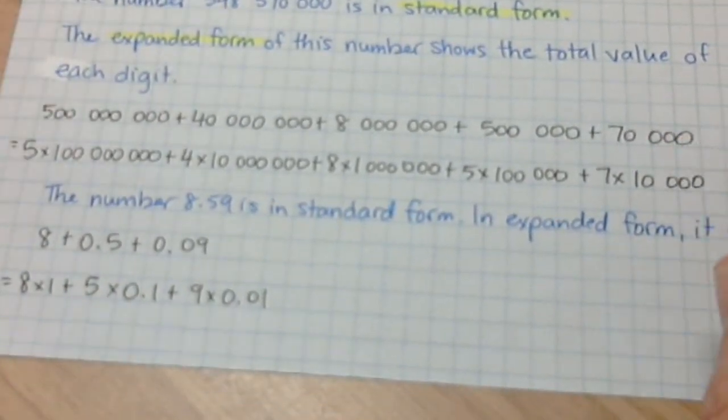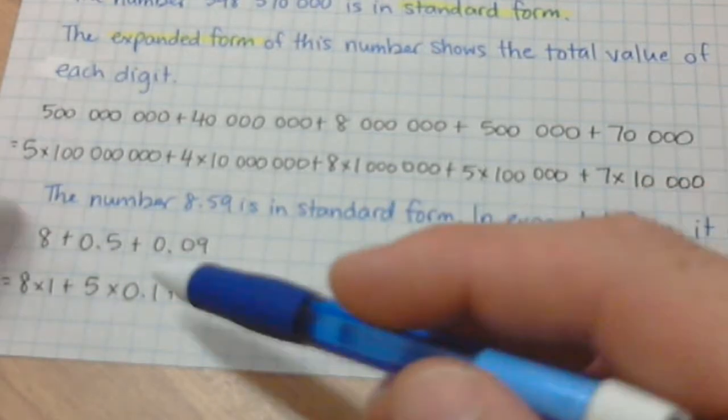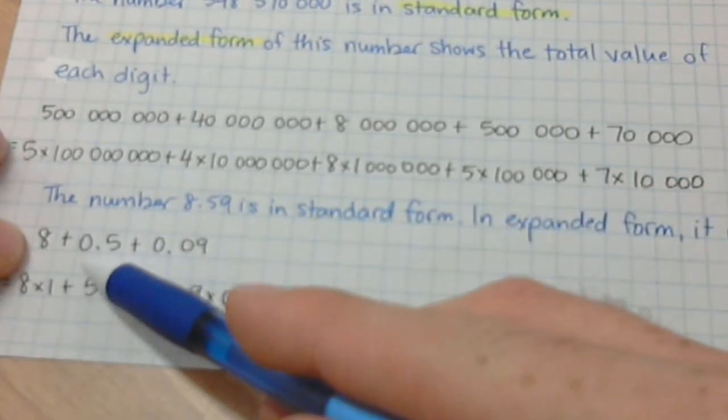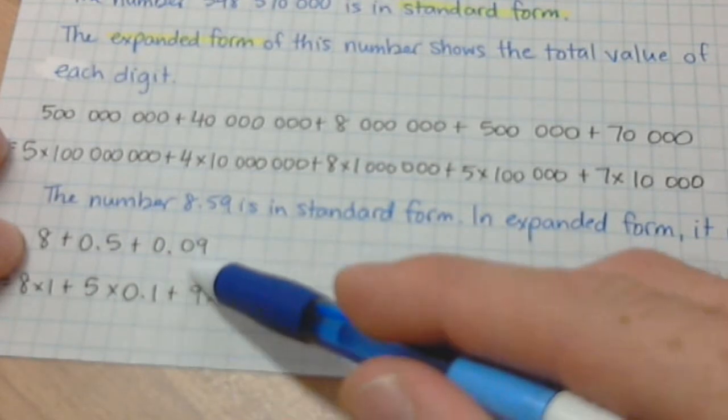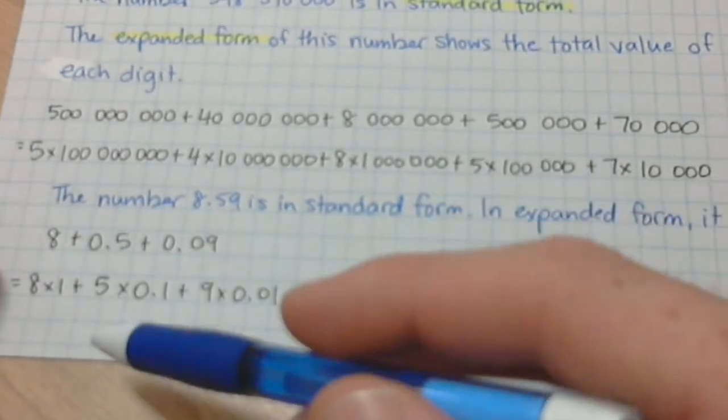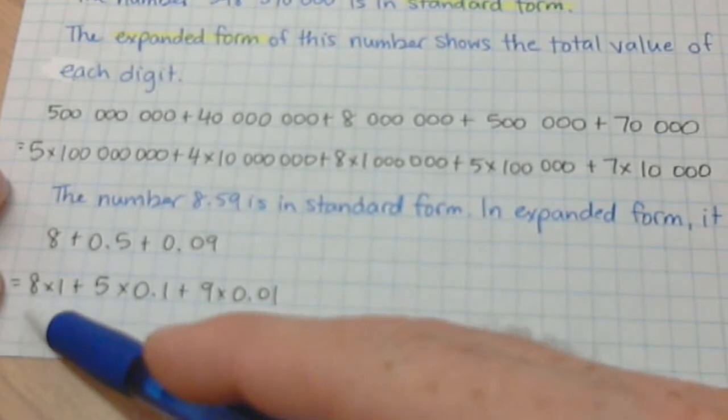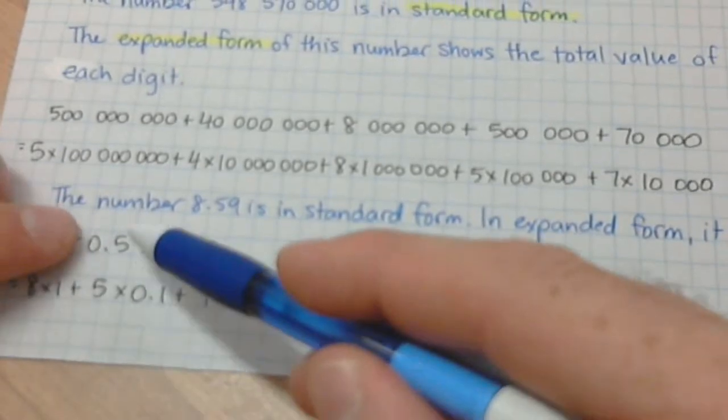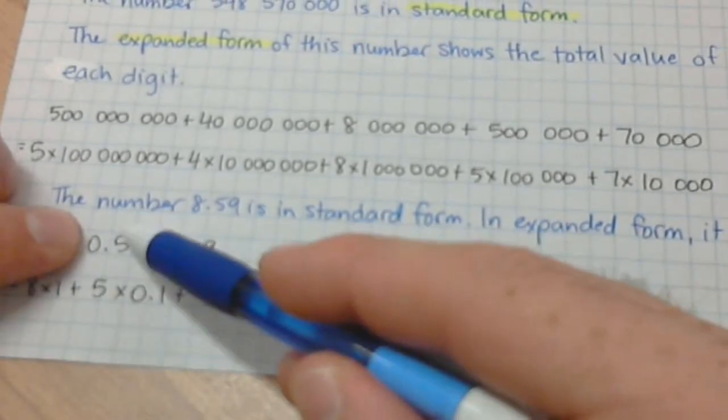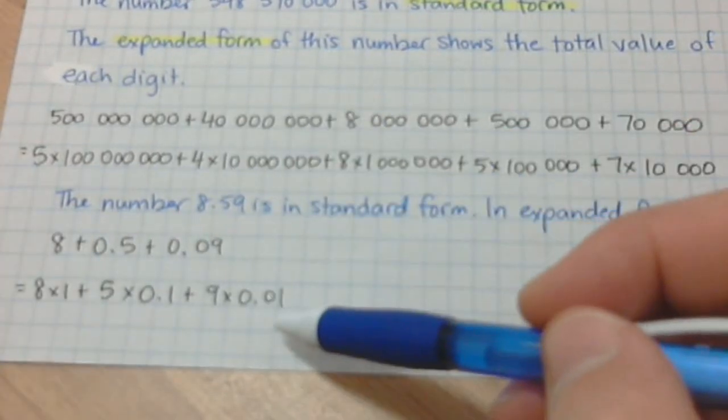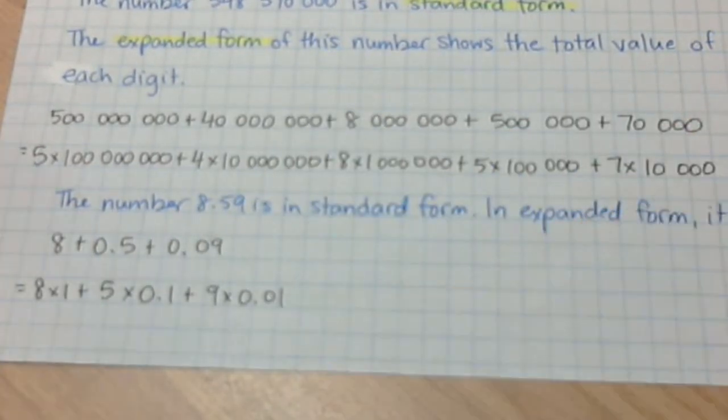Similarly, the number 8.59, that's in standard form, or 8 and 59 hundredths is in standard form. To break it down, it becomes 8 plus 0.5 plus 0.09. And then that gets broken down. It's 8 times 1, because it's in the ones spot. 5 times 0.1, because it's in the tenths spot. And then 9 times 0.01, because the 9 is in the hundredths spot. So if I ask you to write a number in expanded form, that is what I'm looking for. It's a breakdown of the total value of each number.